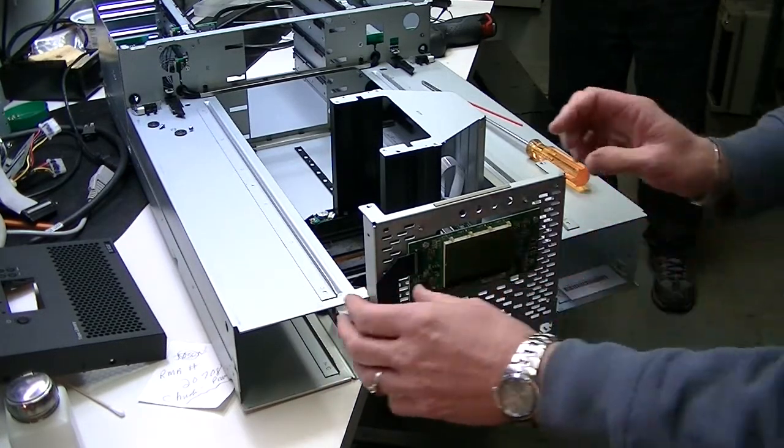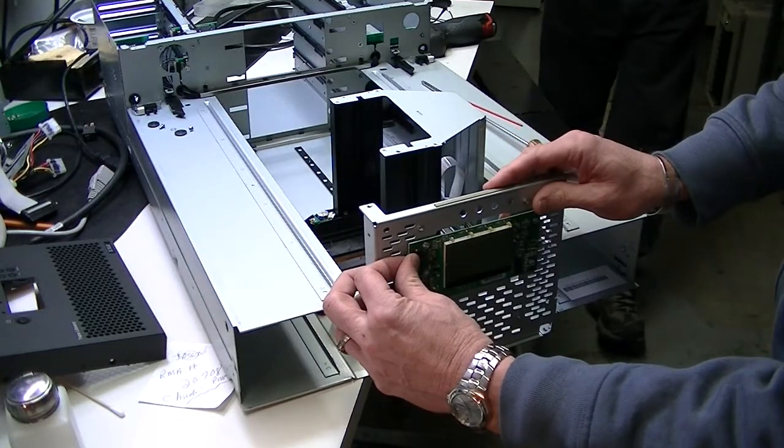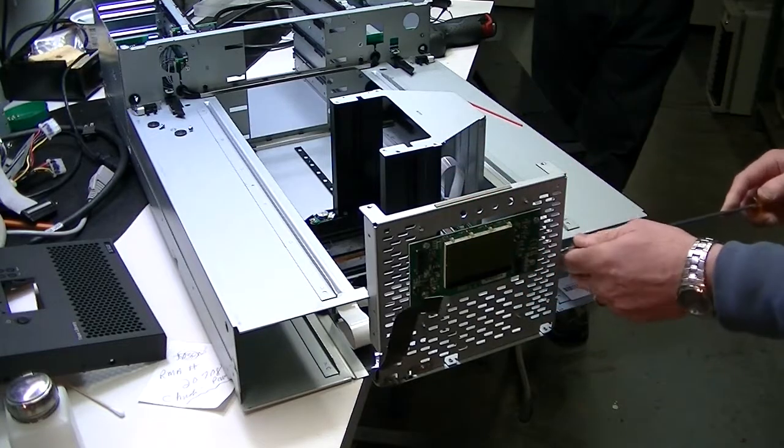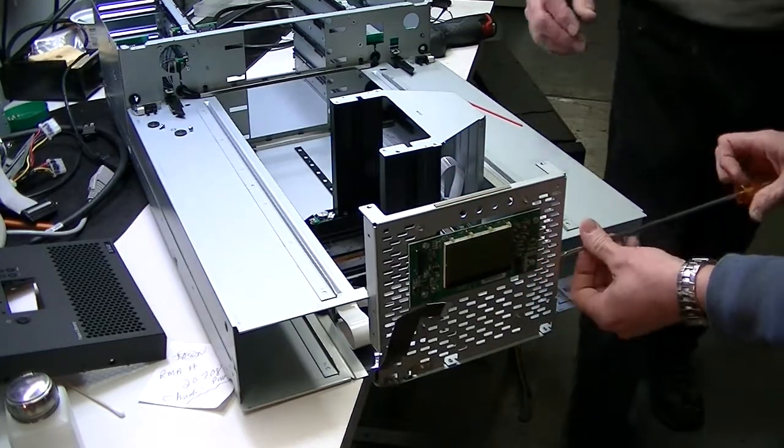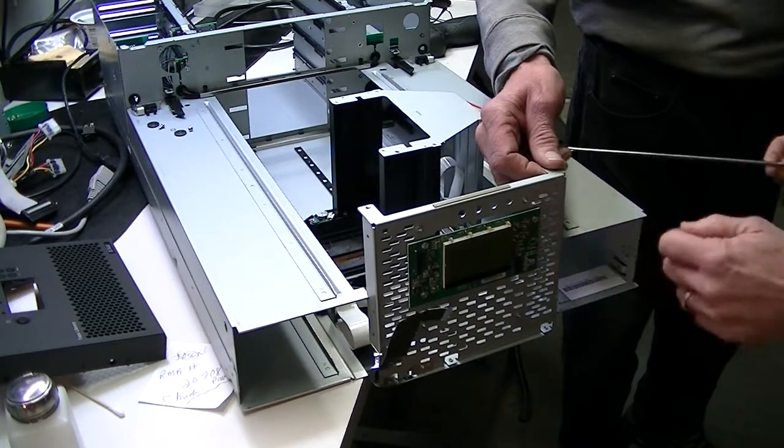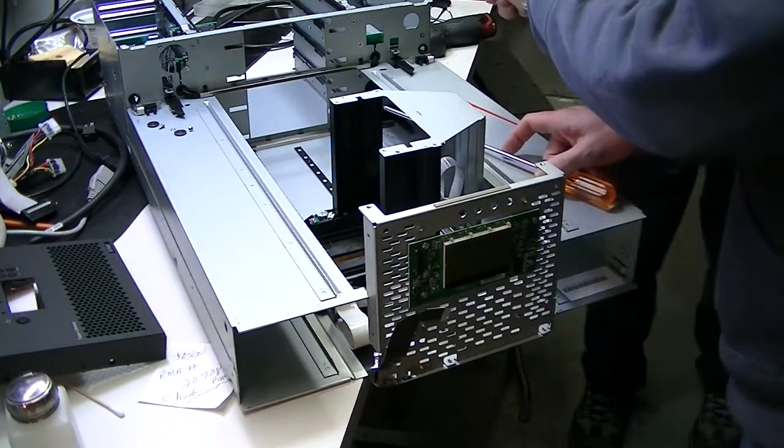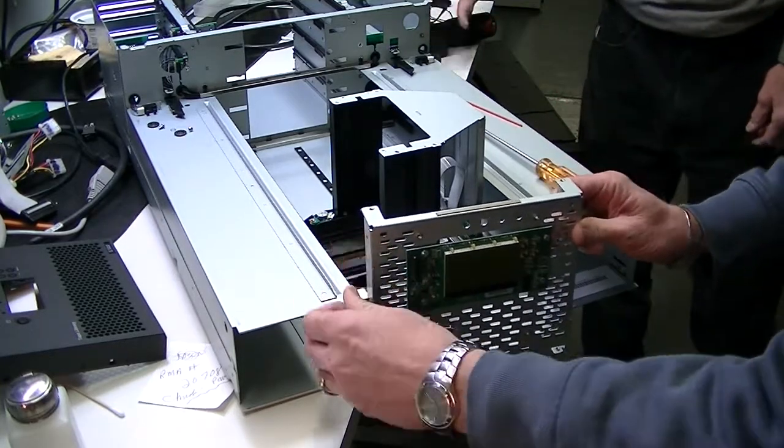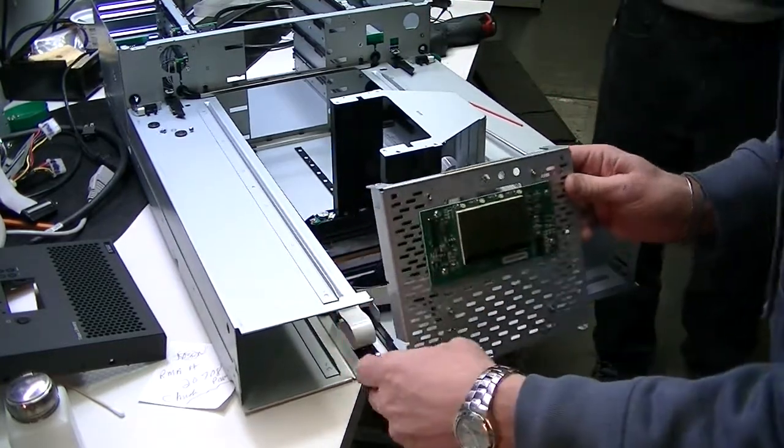Before I remove this one, I'm just going to pull the cable out, and that's just pressed in there. Quite easy to get out. I'll remove that last screw. Put it in a little green container, and then this will just lift out and out of the way.